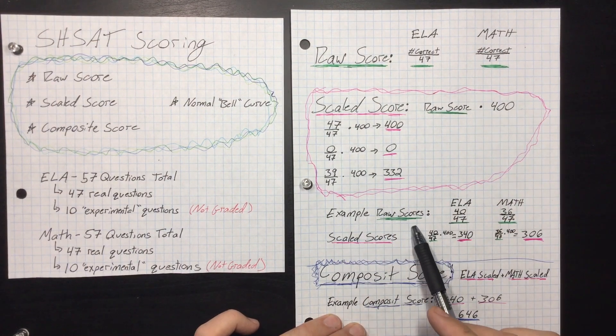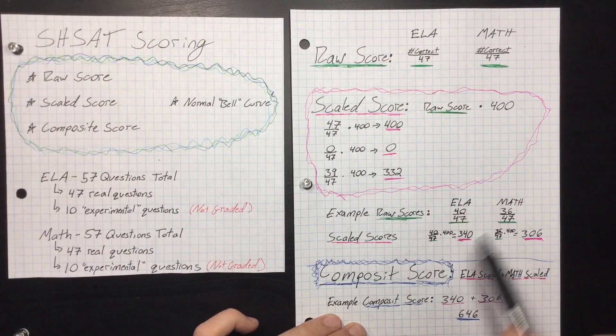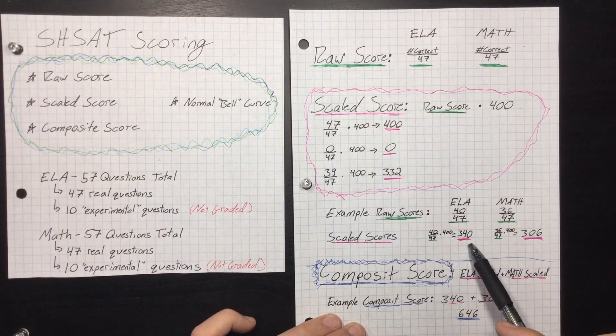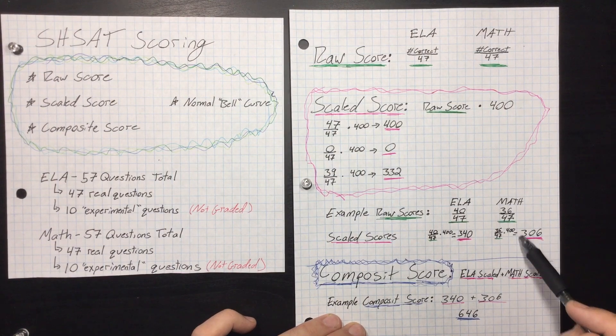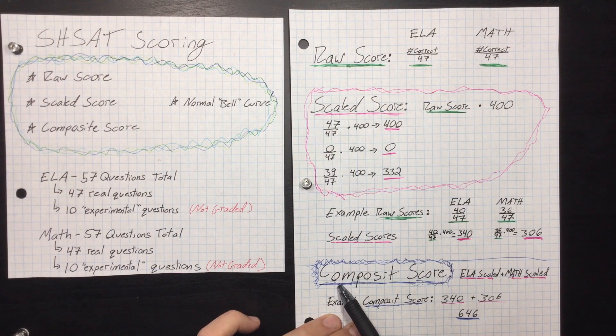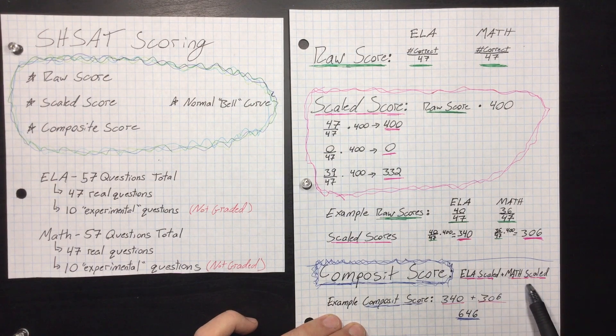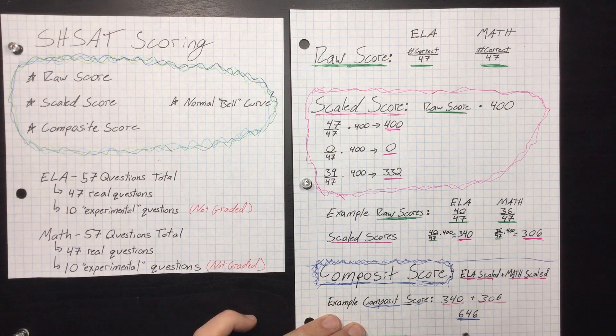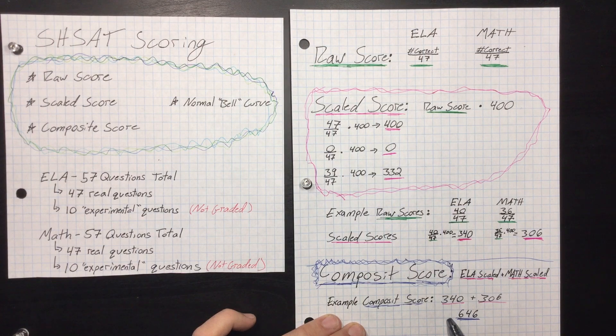So an example of raw scores for the ELA and math section: let's say you got a 40 on your ELA and a 36 in your math, the scaled score for those sections would be 340 for ELA and 306 for the math. What the composite score is, is the score that the schools look at. It is your ELA scaled score plus your math scaled score. So for this previous example where you got 40 and 36, you would add them up, and your composite score would be 646.